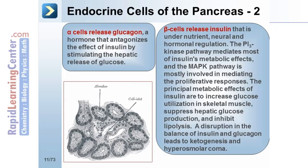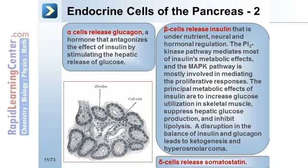The principal metabolic effects of insulin are to increase glucose utilization in skeletal muscle, suppress hepatic glucose production, and inhibit lipolysis. A disruption in the balance of insulin and glucagon leads to ketogenesis and hyperosmolar coma. Finally, it is the delta cells that release somatostatin.